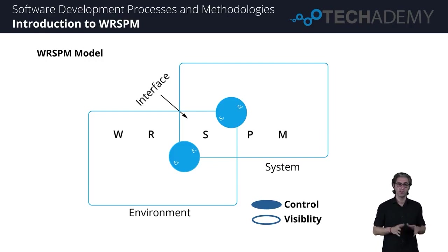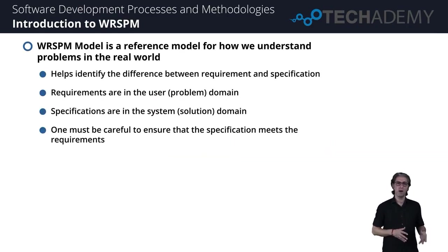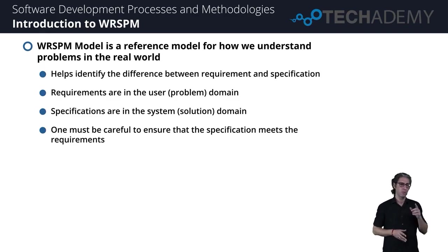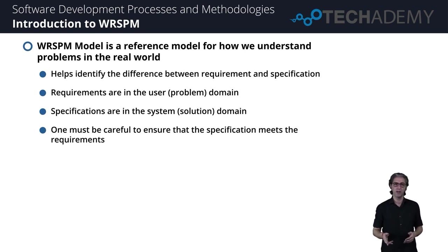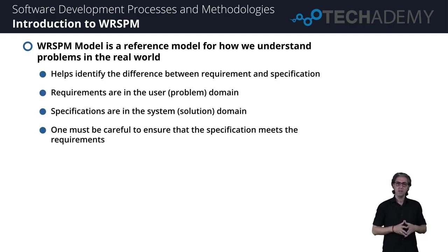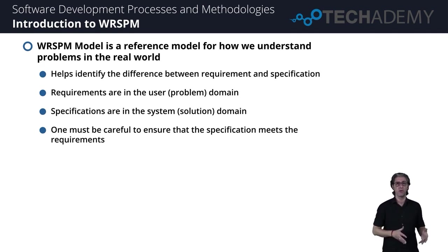Let's revise what we learned. The WRSPM model is a reference model to understand problems in the real world and helps us identify the differentiation between a requirement — the user domain information — and the specification — the system domain, how we'll be solving that problem. You need to be very careful with separating the two, since there is a huge difference between capturing requirements and actually making specifications that really meet those requirements. Just because a system can do it doesn't mean it necessarily meets the requirements.